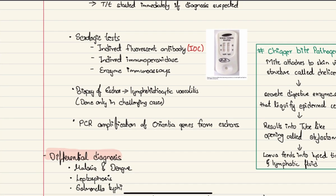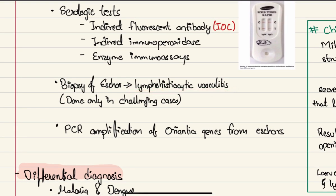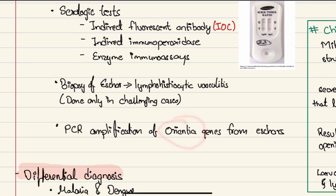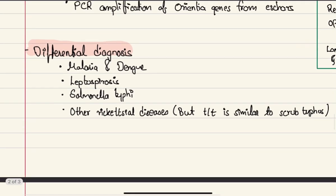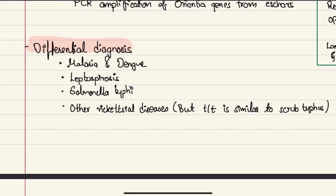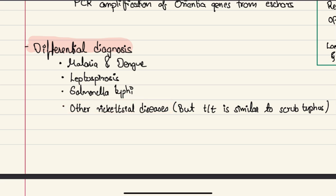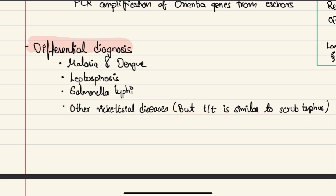Biopsy of the eschar showing lymphohistiocytic vasculitis is another diagnostic option, used only in challenging cases. PCR amplification of bacterial genes is also possible but rarely needed or commonly performed. The differential diagnosis includes malaria, dengue, leptospirosis, Salmonella typhi, and other rickettsial diseases, though other rickettsial diseases are not usually differentiated since treatment is similar.